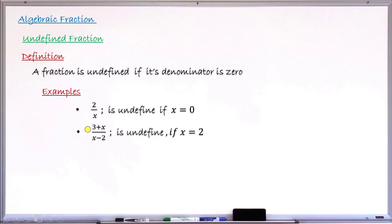Another fraction is (3 + x) over (x minus 2). This fraction could be undefined if the value of x is equal to two, because substituting x by two there, you now have two minus two in the denominator. This makes it zero — two minus two is zero — so this fraction will be undefined when x equals two.